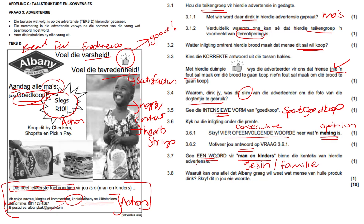3.8. What is showing us in this advert that Albany wants people to tell them what they feel about their product? They gave us their contact details at the bottom. They say: if you have any questions, any complaints, any comments, please contact our client services and they give their contact details. So you just say that Albany nooi mense uit om vir hulle te kontak, klagtes te gee, kommentaar te lewer, navrae te doen — anything along those lines. And you will be 100% okay. And that's it, guys. I will see you in the next one.